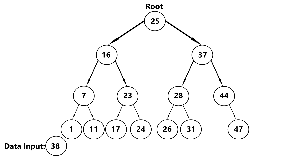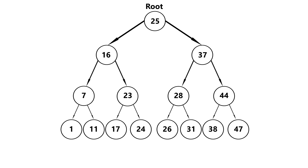And finally, inserting 38: 38 is greater than 25, so we go right. 38 is greater than 37, so we go right again. And 38 is less than 44, so it becomes the left child of 44. So that's pretty much the ins and outs of inserting within a binary search tree.